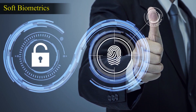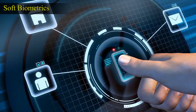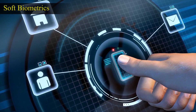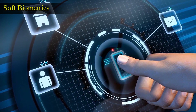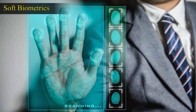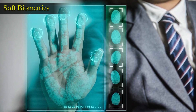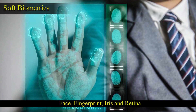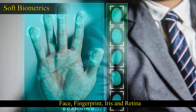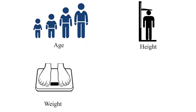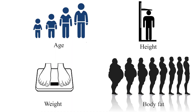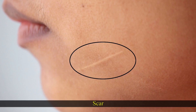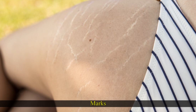There are also soft biometrics. Soft biometrics are not distinct and permanent — they are not enough to uniquely identify a person. However, when combined with primary biometrics like face, fingerprint, iris, and retina, they give better results. Examples of soft biometrics include age, height, weight, body fat content, eye color, skin color, scars, tattoos, marks, etc. All these biometrics add meaning to the phrase 'our body as password.'